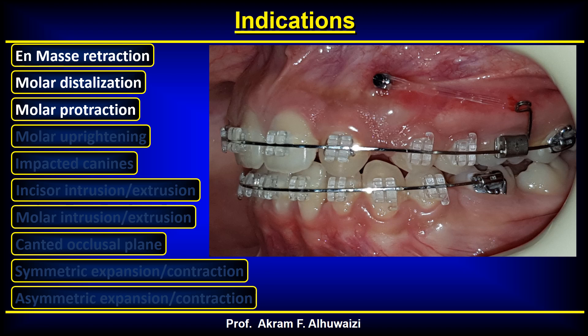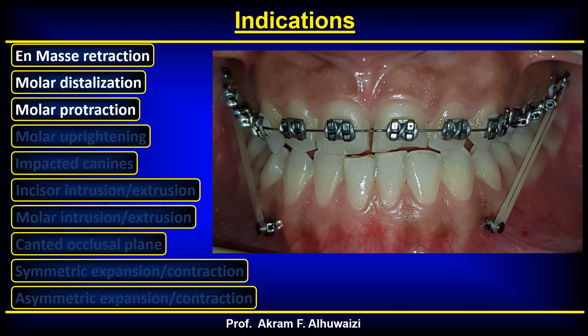Molar protraction involves placing TADS in the anterior region and protracting the molar to close spaces, especially when you have missing lateral incisors. A power arm is generally used here to elevate the line of force closer to the center of rotation, decreasing mesial tipping of the molars. You can also protract molars using TADS placed in the opposing arch, especially useful in Class 3 patients where you have upper spacing but do not want to use Class 3 elastics, as those would distalize and lingually tip the lower incisors.